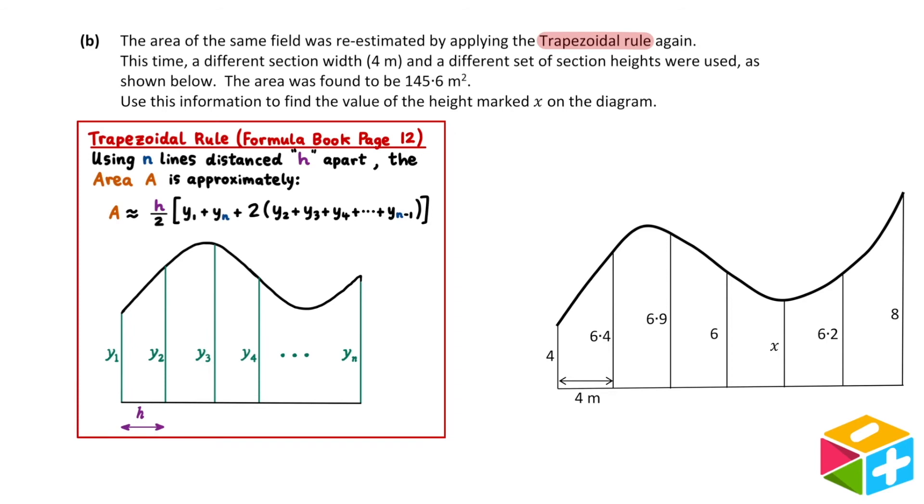Just like the previous part of the question, we need to use the trapezoidal rule. Let's have a look at our diagram and identify the values for each of the letters in the rule. n is the number of vertical lines we have. Here, we have 7 vertical lines, so n is equal to 7.